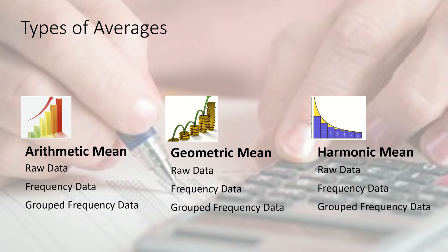Geometric mean is suitable when the data has some geometric behavior — not necessarily geometric progression, but geometric behavior. We'll compute geometric mean for raw data, frequency data, and grouped frequency data. If the data has harmonic behavior, harmonic mean will be used as a suitable representation, and we'll compute that for raw data, frequency data, and grouped frequency data as well.